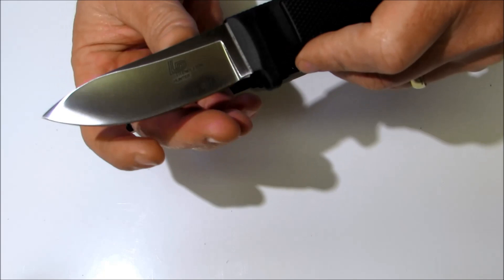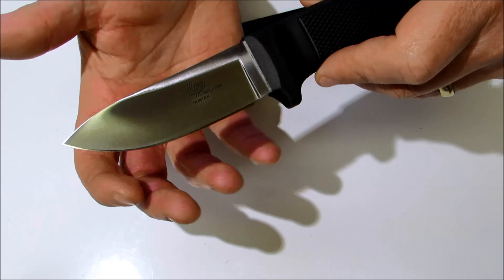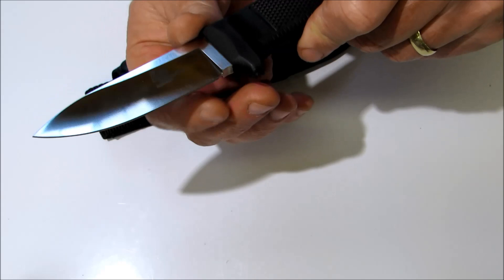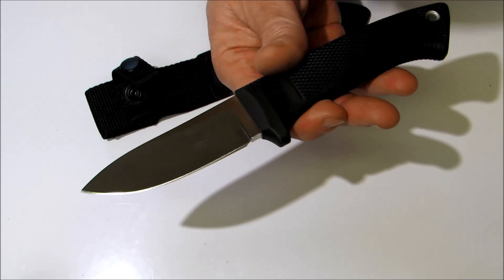The blade steel is VG1 stainless. It's a drop point style blade and it's not too long so you don't have to worry about puncturing any organs when you're skinning. Again it's the VG1 stainless steel. It's got a high hollow grind.